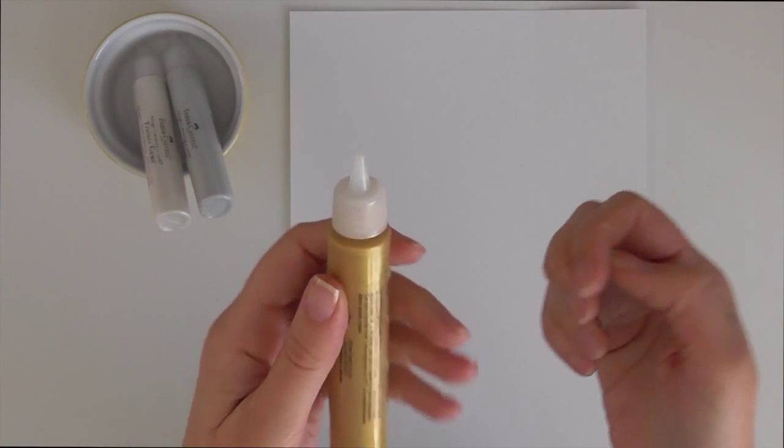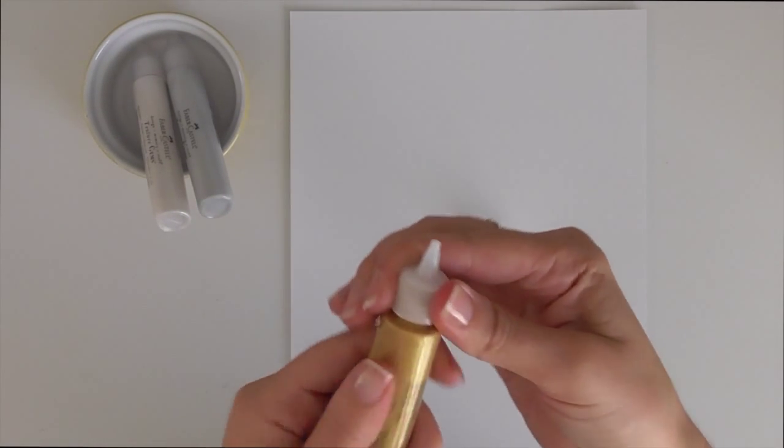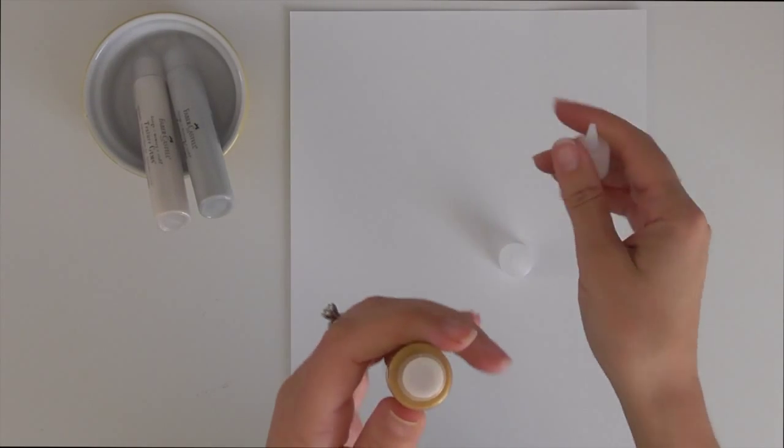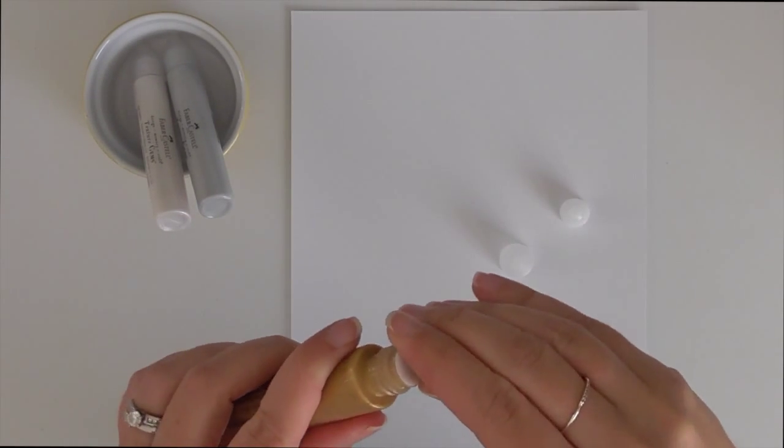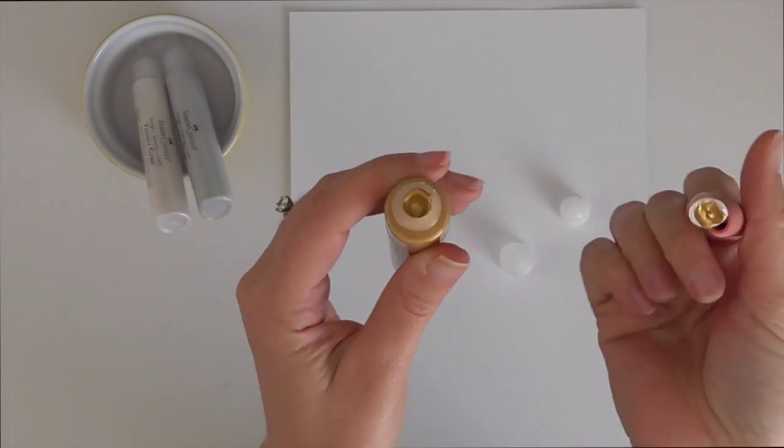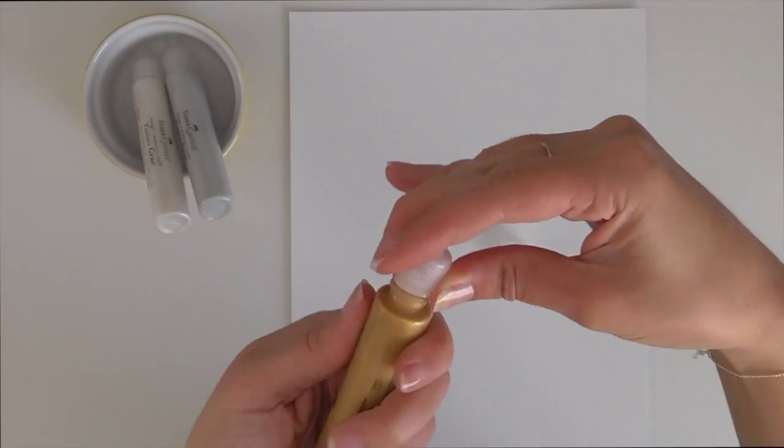When using your texture gems for the first time, you'll need to take off the outer cap, twist off the precision nib, and remove the protective paper. That just kept it safe while it was getting into your hands. Then you can screw the nib back on.